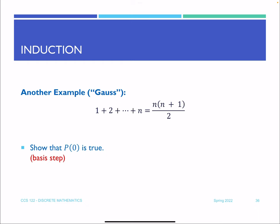Here's another example: the Gaussian summation. We're adding up integers from 1 to n, and the formula is the well-known closed form. Let's prove that this is actually correct using induction. For the basis step, n=0: the left-hand side is 0, and the right-hand side is 0×1/2 = 0, so both sides match.